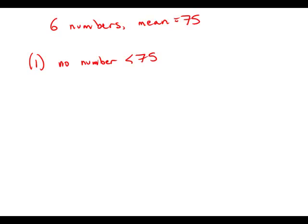So the very fact that we're told that there are no numbers less than 75 means there also can be no numbers greater than 75. So this tells us right away, all by itself, that all six numbers equal 75. This statement by itself is sufficient.